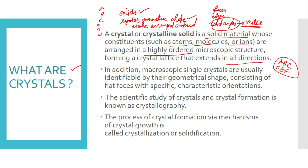Microscopic single crystals are usually identifiable by their geometrical shape, consisting of flat faces with specific characteristic orientations. We will look further at the different types of crystals — the cubic system, monoclinic system, orthorhombic system, and so on. The scientific study of crystals and crystal formation is known as crystallography, and the process of crystal formation via crystal growth is called crystallization or solidification.